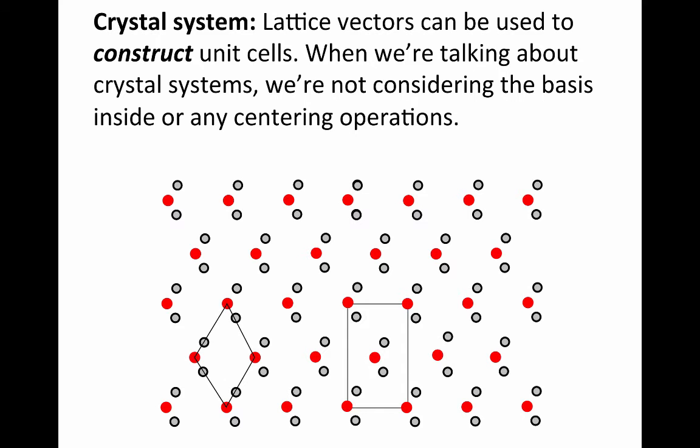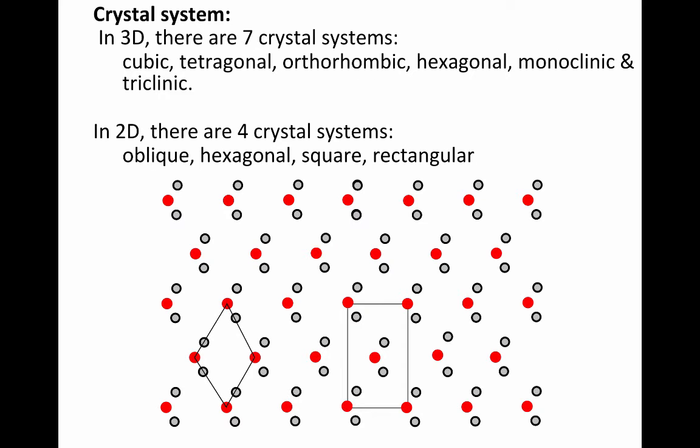If the lattice vectors can be used to construct the unit cell edges, then the unit cell you're considering is part of a crystal system. First of all, when we're talking about a crystal system, we're not talking about the basis inside or any centering operations. We're just talking about what the shape of the cell looks like.